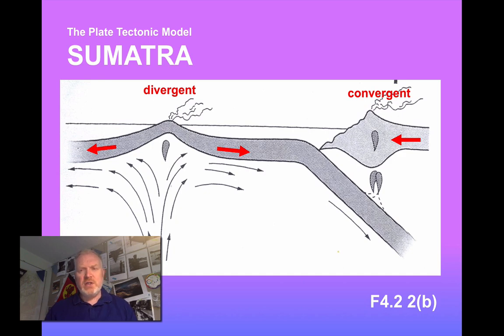Now we're going to start by looking at a convergent margin. Sumatra is a really interesting example of this and takes us a little step further than convergent margins we'll have looked at, for example, around the Pacific in the past.